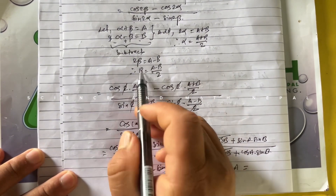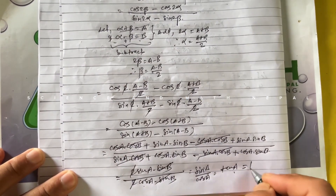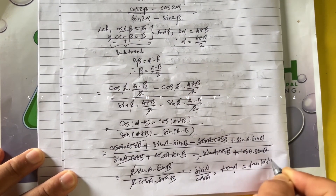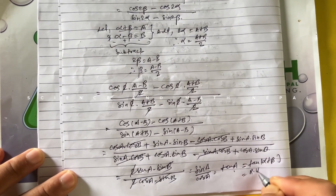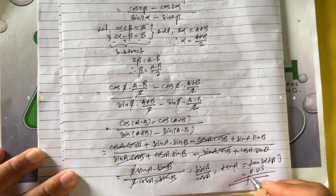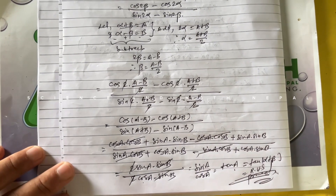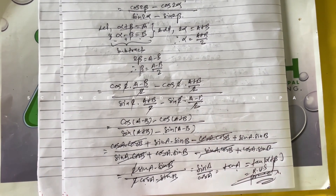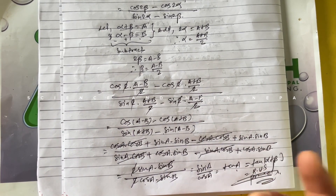And what is the value of a? 'a' equals α + β, so sinA / cosA = tan(α + β), which is the RHS. Hence proved. That's all — if you have any other questions or queries, please comment. If it's helpful, please share, like, and subscribe. Thank you very much.